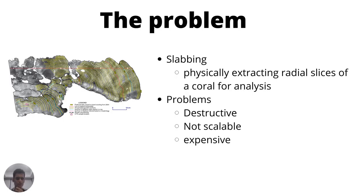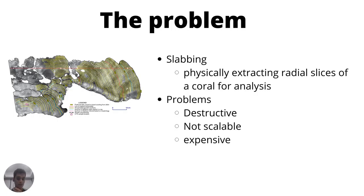So what is the problem? When we try to study these corals, we typically use a method called slabbing, in which the coral is physically cut open, as can be seen in this picture, then x-rayed, and the different rings and bands are analyzed. The problems are that it's destructive — you have to cut it open — it's not scalable, and it's also pretty expensive.